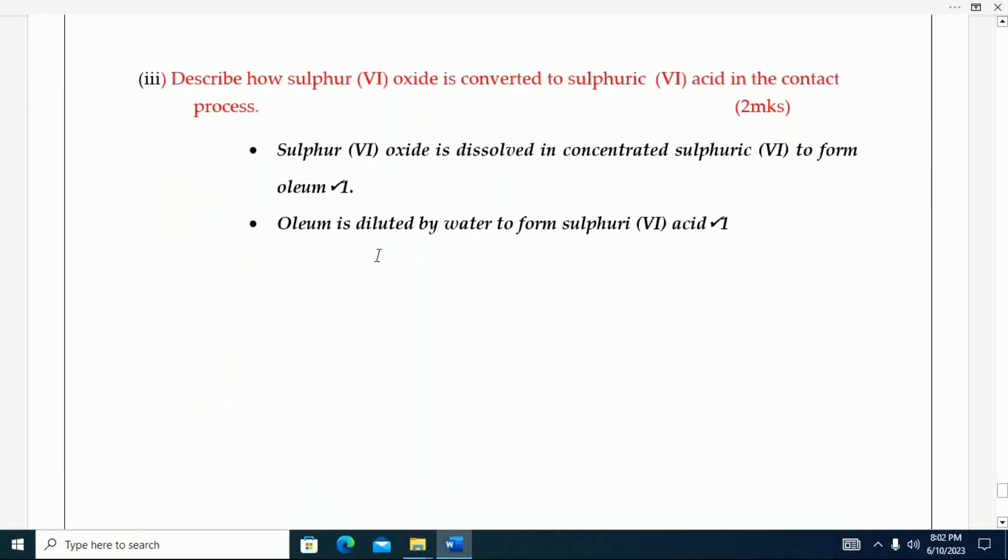Describe how sulfur trioxide is converted to sulfuric acid in the contact process. Sulfur trioxide is dissolved in concentrated sulfuric acid to form oleum. It is diluted by water to form sulfuric acid.